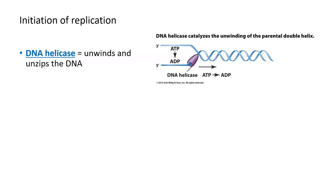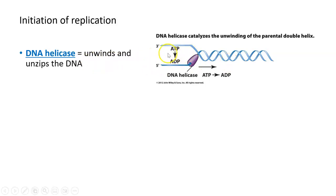The first thing that has to happen in order for DNA replication to proceed is the two strands of the DNA double helix need to be unwound and separated from each other. There's a particular enzyme responsible for this unwinding and unzipping of the DNA called DNA helicase. This enzyme breaks those hydrogen bonds between the nitrogen bases of the DNA, allowing both strands to be separated and used as templates for DNA synthesis.